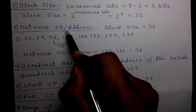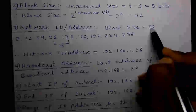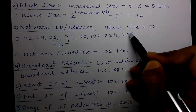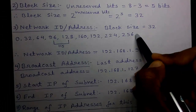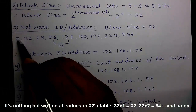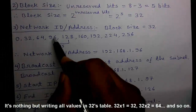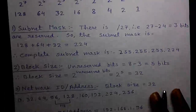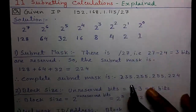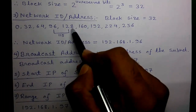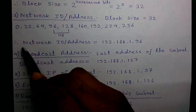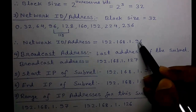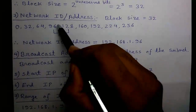Third calculation: network ID or network address. The block size is 32, so we count in blocks of 32 starting from 0, ending at 256 — because with 8 binary bits we can represent a maximum of 2 to the power 8 equals 256. Counting: 0, 32, 64, 96, 128, and so on up to 256. Our given IP 115 falls between 96 and 128, so starting value 96 is our network ID. The network address is 192.168.1.96.